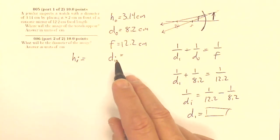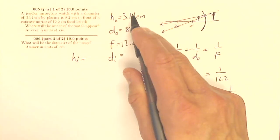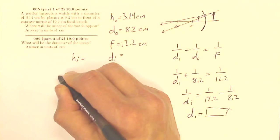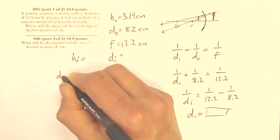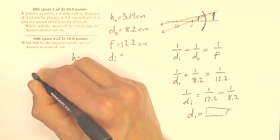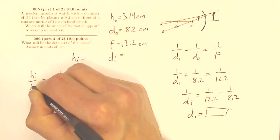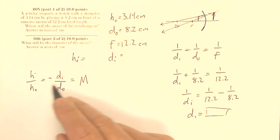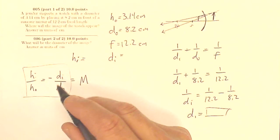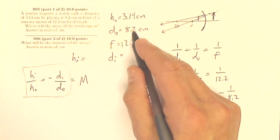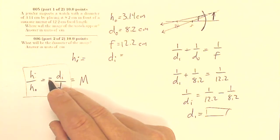Well, now if I know di and I know do, I can get hi if I know ho. So I know that negative di over do is equal to hi over ho is equal to the magnification. This is my equation, but I only need these parts of it. So since I have my di, which is negative, and my do, which is positive, but I have a negative here. So it's negative of a negative.